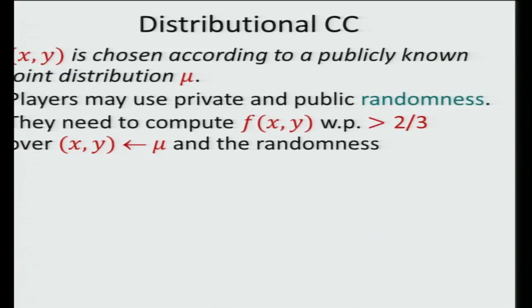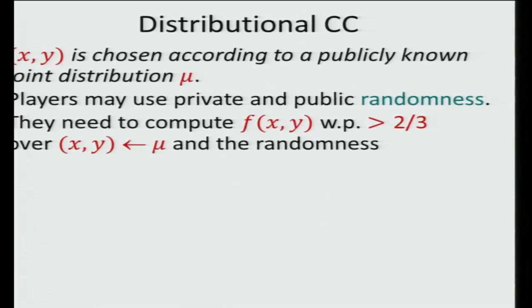In distributional communication complexity we have an underlying distribution, we allow the players to flip coins to make random decisions, and we allow them to err with small probability of up to one-third. Alice can flip a coin that Bob doesn't see — this is private randomness — or they can flip a coin together that both can see — this is public randomness. We allow them to flip any kind of coins and only expect them to compute the function with good probability. It's a relaxed notion.